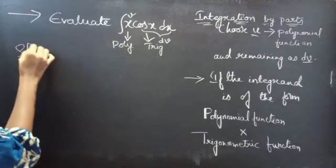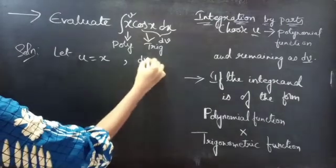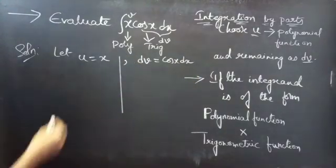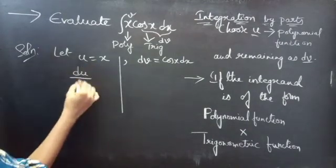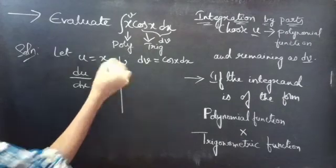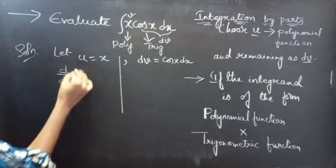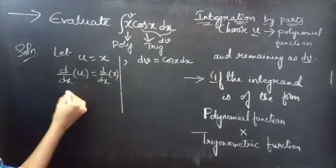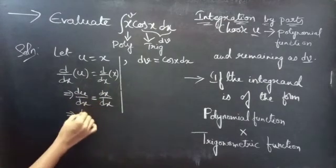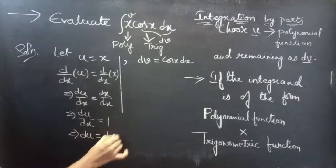Solution: let u equals to x and dv equals to the remaining, that is the trigonometric function cos x dx. Now find the derivative of u with respect to x. Differentiating both sides with respect to x, you will get derivative of x with respect to x is 1. From this we will get du equals to dx.